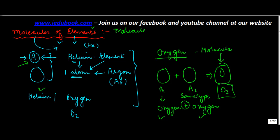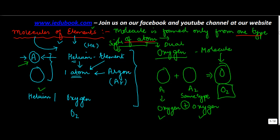In case of molecules of elements, a molecule is formed only from one type of atom. It could be single, it could be dual, but the atom is only of one type. That's the property that molecules of elements have.